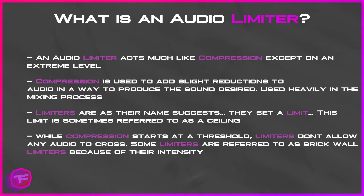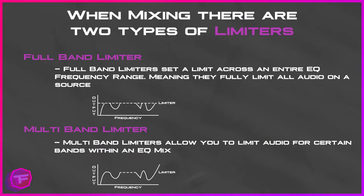There are two types of limiters: the full-band limiter and the multi-band limiter. When adjusting EQ for tracks, we use the term 'band,' which refers to a specific range or frequency with its own set bandwidth within an entire frequency range. The full-band limiter can adjust all frequencies — the full entire band of the frequency spectrum — limiting the entire audio signal.